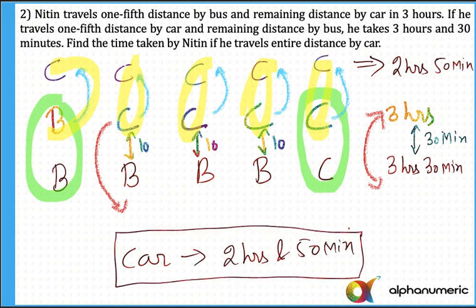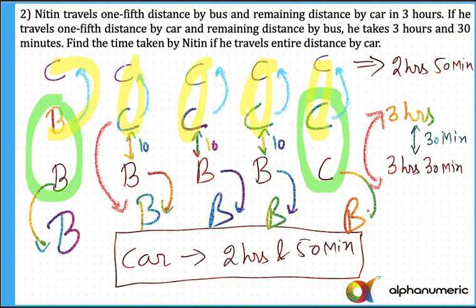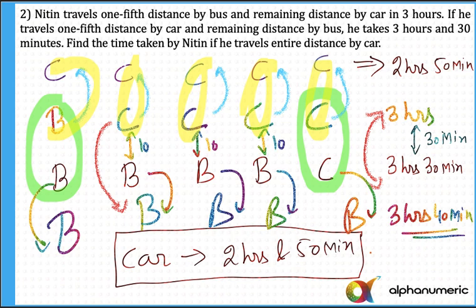The same concept applies if the question asks for the total time traveling the entire distance by bus. Bus, bus, bus, bus, and bus. For the first part no change, second part bus to bus, third bus to bus, fourth bus to bus, but the moment I move the last part from car to bus, there is a further increase of 10 minutes. So the answer will be 3 hours and 40 minutes. If traveling entire distance by car: 2 hours and 50 minutes; if by bus: 3 hours and 40 minutes.